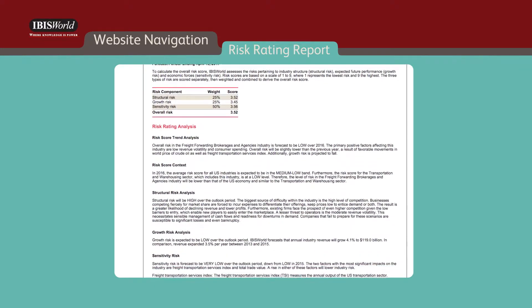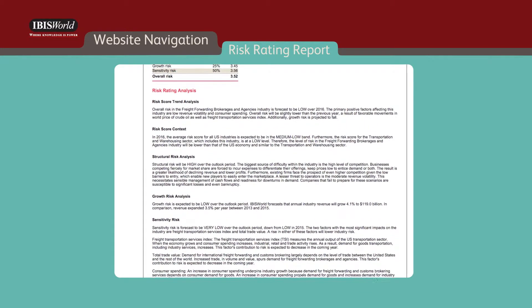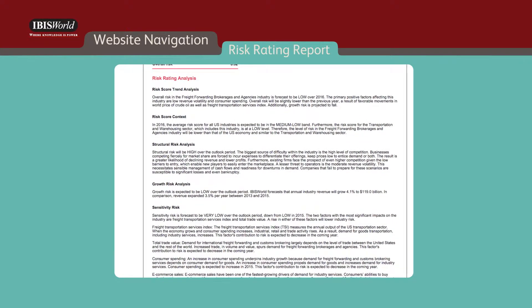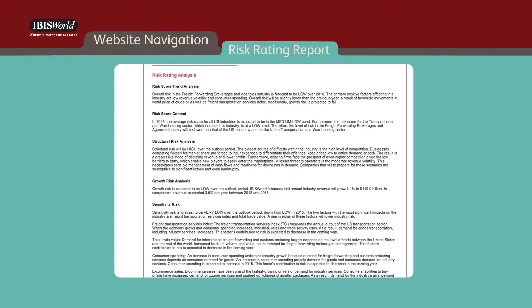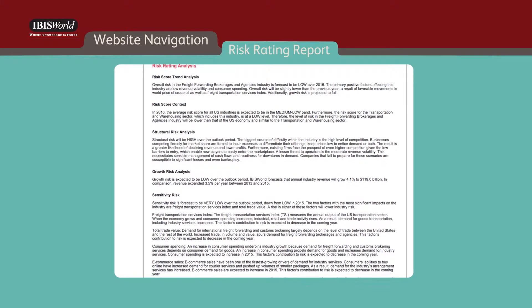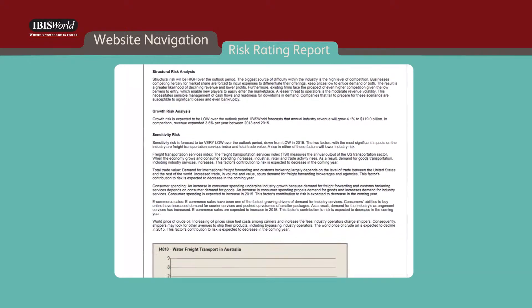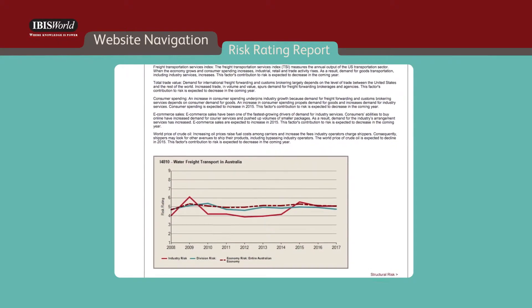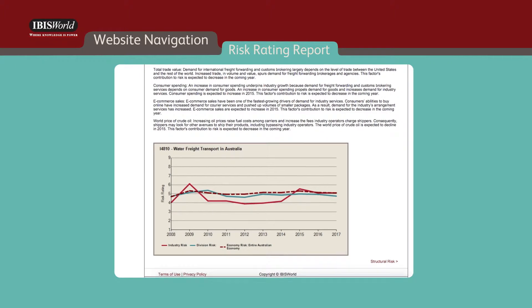In determining an industry's risk score, we look at three different types of risk: structural risk, growth risk, and sensitivity risk, to provide you with a clear idea of the level of risk an industry will face over the coming 12 to 18 months.